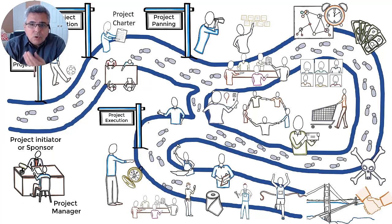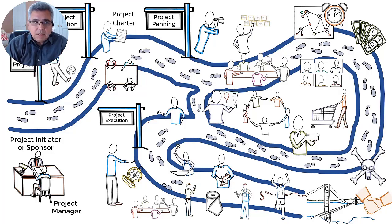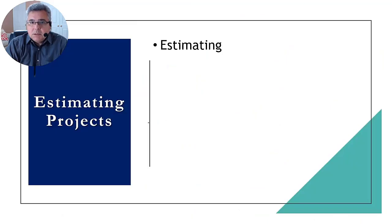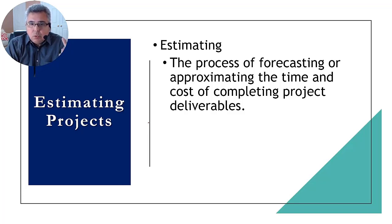Let's now try to locate where we can use estimates in that project life cycle. First, let's understand — let's have a definition for project estimates. Estimating is the process of forecasting or approximating the time and cost of completing project deliverables. Here are two keywords: forecasting and approximating.